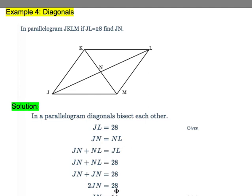And when we divide both sides by 2, we get 14. And it makes sense. If this whole thing is 28, then JN is just half of 28, and half of 28 is 14.